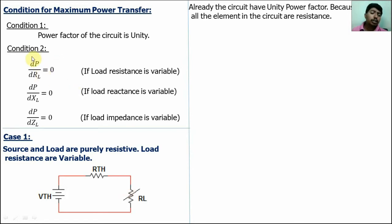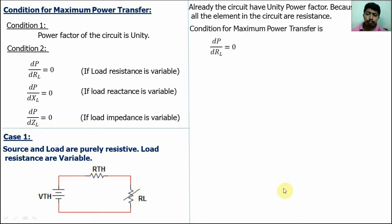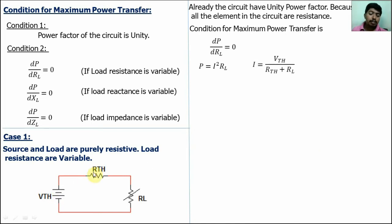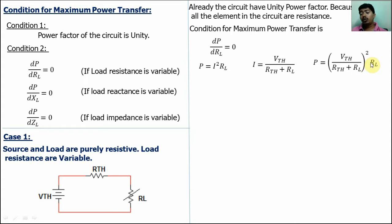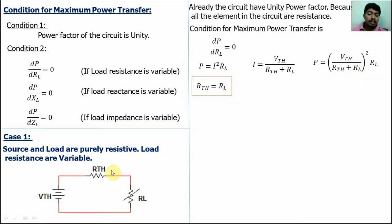For the second condition, we have to differentiate the power of the circuit by the variable RL. First find power: P equals I squared R, where I equals VTH divided by (RTH plus RL) by Ohm's law. So P equals VTH squared divided by (RTH plus RL) squared, multiplied by RL. Now differentiate the power by RL using the UV format — U·V' plus V·U' — set equal to zero, and we get RTH equals RL. When RTH is equal to RL, the power transfer will be maximum.